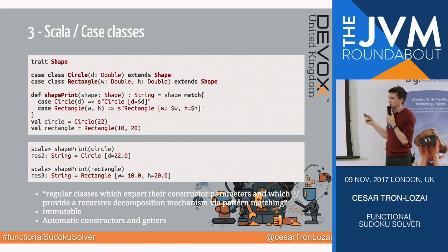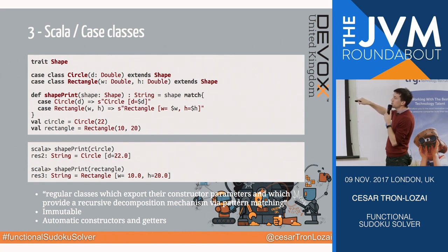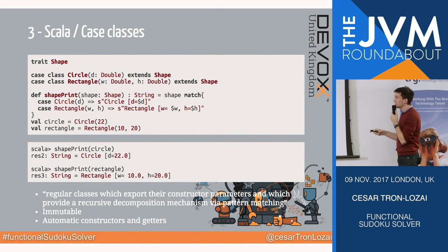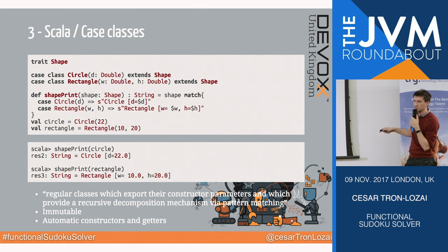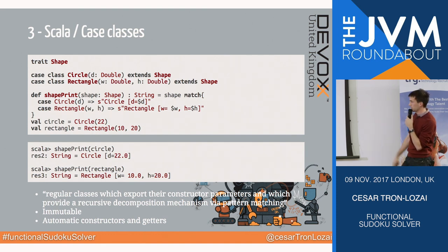One of the very cool features of case classes is that I can do pattern matching on them. In Java we like to write polymorphism inside the implementation — we would write one in circle, one in rectangle. But in Scala they like to keep things in one place. So we just write one shape print method that takes a shape, and then I can do a match. Because the compiler knows there are only two possible implementations of shape, I can do a case circle and a case rectangle. This is actually a lambda — when I do this I can extract the D from my circle, which is the diameter, and use it. It's the same for the rectangle. These slides are made in Scala, and when I run the slide, it actually executes that code.